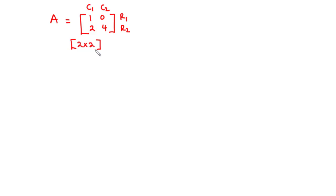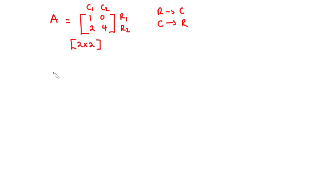So, how do we obtain the transpose of this given matrix? To obtain the transpose of a given matrix, we basically interchange the rows and columns — that is to say that rows become columns and columns become rows. The resulting matrix obtained after interchanging the rows and columns is said to be the transpose of matrix A, denoted as A superscript T, or A'.